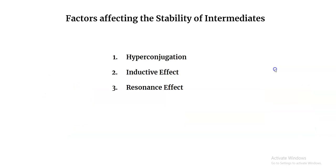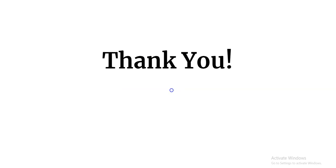Earlier I talked about the trend in stability of carbocations, carbanions, and free radicals. In our next session we'll discuss why those trends are as such — what factors come into play. There are three important effects: hyperconjugation, inductive effect, and resonance effect. I'll explain these factors in detail in the next session. Until then, goodbye, thank you.